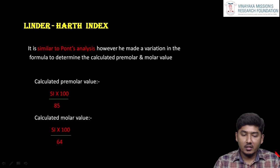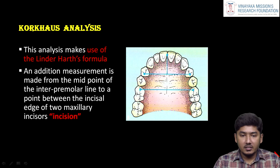Next is Lindroth. It is exactly similar to Pons analysis. Instead of 80 in the calculated premolar value formula, he has mentioned 85. That is all — the rest is the same as Pons.